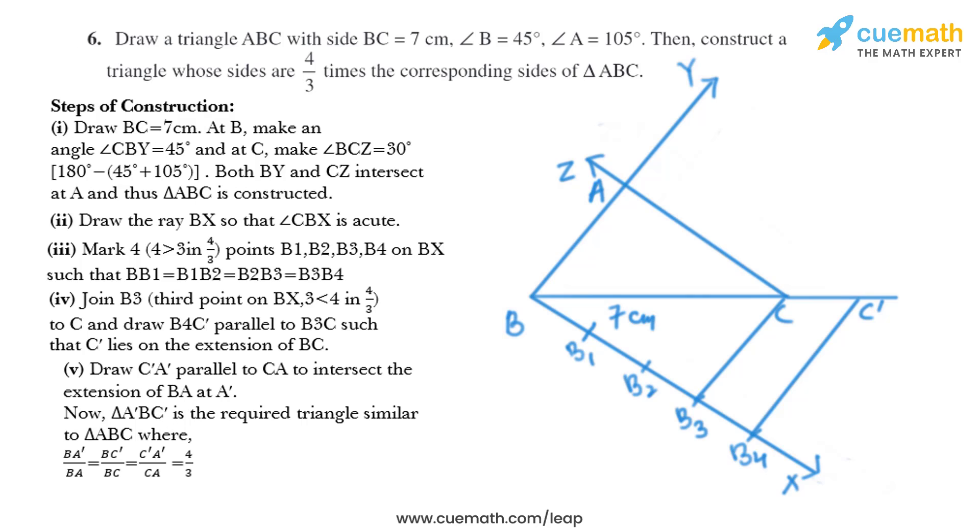We'll draw a line like this that is parallel to CA, and we'll name the point of intersection as A'. So we have got the triangle that is A'BC', that is the required triangle, and that is similar to triangle ABC.